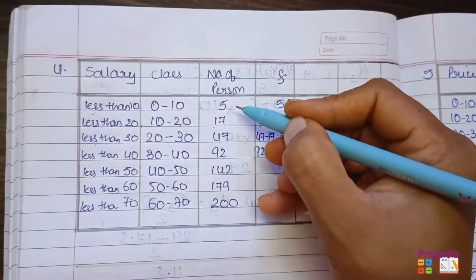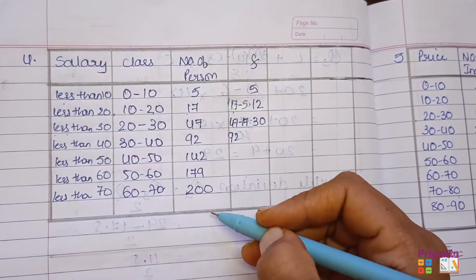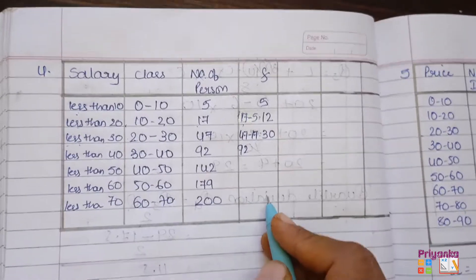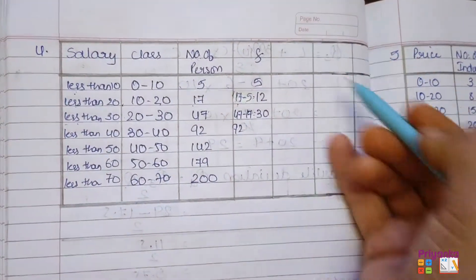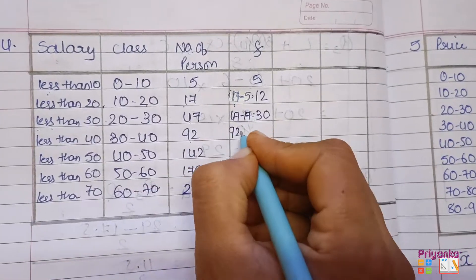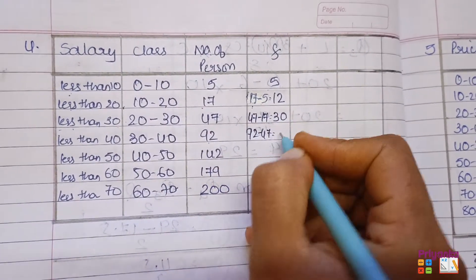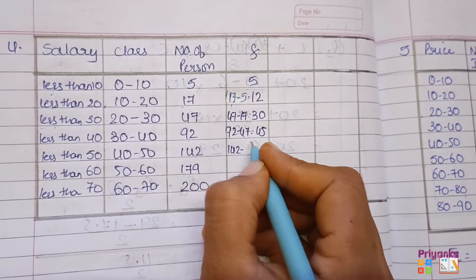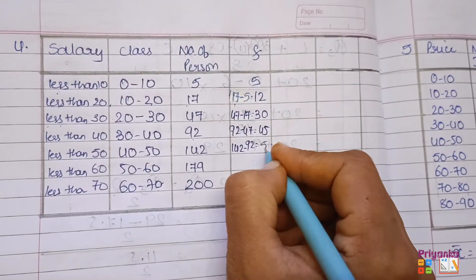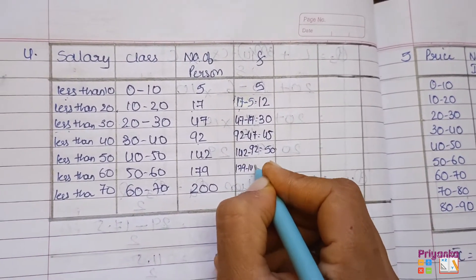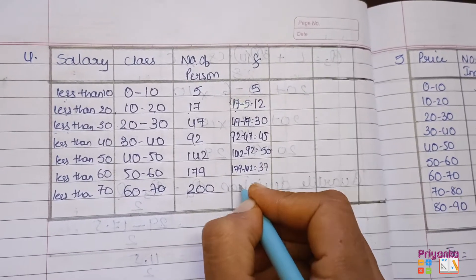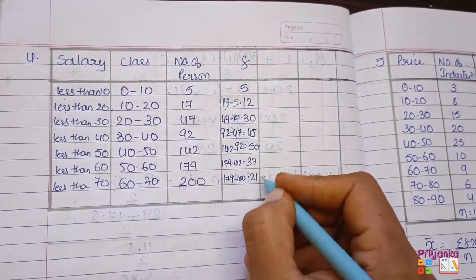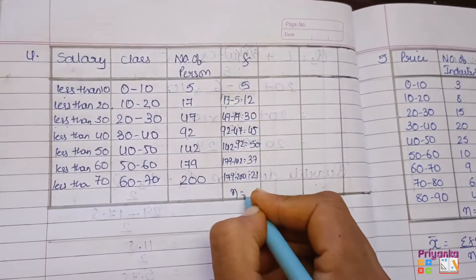Continuing: 92 minus 47 gives 45. Then 142 minus 92 gives 50. Then 179 minus 142 gives 37. Then 200 minus 179 gives 21. The total number of frequencies will be n, that is 200. Now we are ready with the classes and the frequencies.